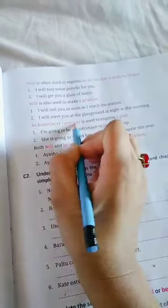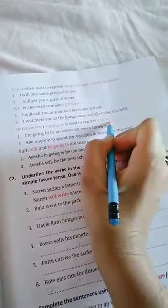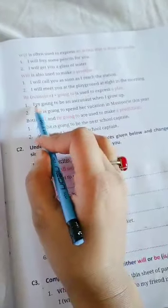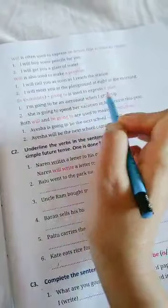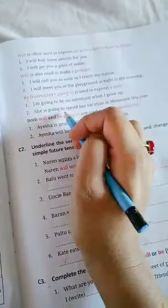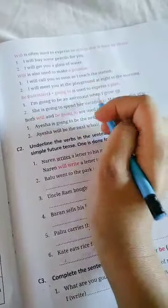Now, be plus going to - where do we use be plus going to? To express a plan. When we have made some plan and I want to express my plan that I'm going to do that, then I will use be plus going to. See the example: I am going to be an astronaut when I grow up. When I grow up I will become an astronaut - this is my plan. She is going to spend a vacation in Mussoorie this year. This is her plan - this year she will spend her vacation in Mussoorie. These are plans.